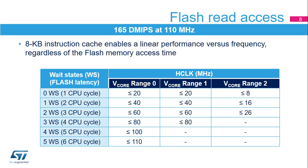In order to read the flash memory, it is required to configure the number of wait states to be inserted in a read access depending on the clock frequency. The number of wait states also depends on the voltage scaling range. In range 0, the flash memory can be accessed up to 110 MHz with 5 wait states, and with 0 wait states up to 20 MHz. In range 1, the flash memory can be accessed up to 80 MHz with 3 wait states. In range 2, the flash memory can be accessed up to 26 MHz with 2 wait states.